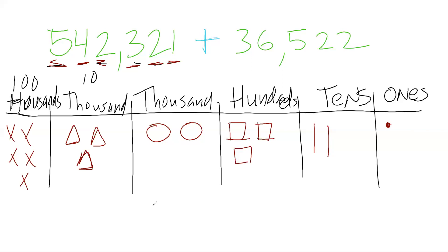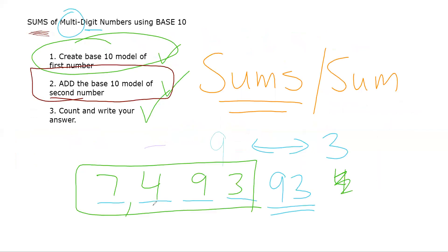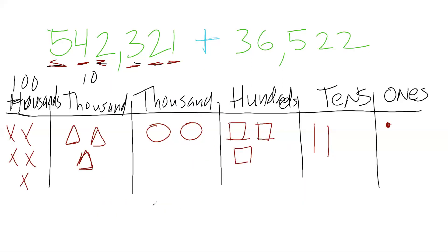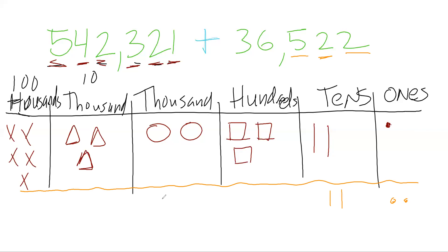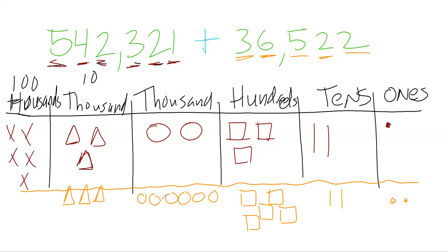Step two: add the second number. I'll change colors to make it easier to separate. I draw a little line to show this is the second number now. For 36,522: two ones, two tens, five hundreds, six thousands, and three ten thousands.